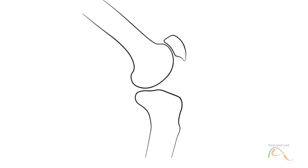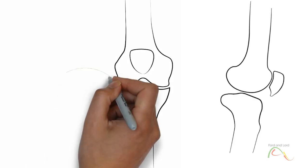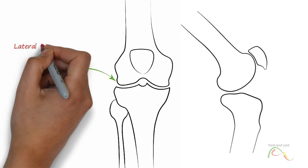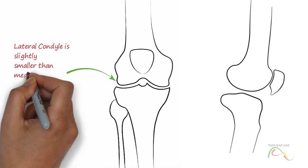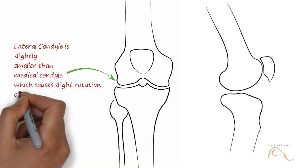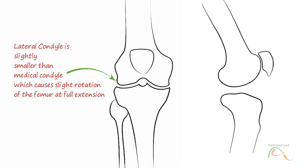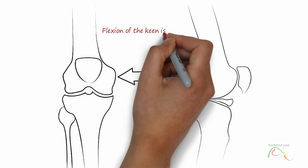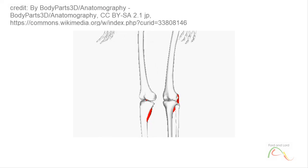As the knee comes into full extension, the femur undergoes a slight medial rotation in relation to the tibia. This rotation results because the lateral condyle of the femur is slightly smaller than the medial condyle. Thus, the lateral condyle finishes its rolling motion first, followed by the medial condyle. The resulting small medial rotation of the femur locks the knee into its fully extended and most stable position. Flexion of the knee is initiated by a slight lateral rotation of the femur on the tibia, which unlocks the knee. This lateral rotation motion is produced by the popliteus muscle of the posterior leg.